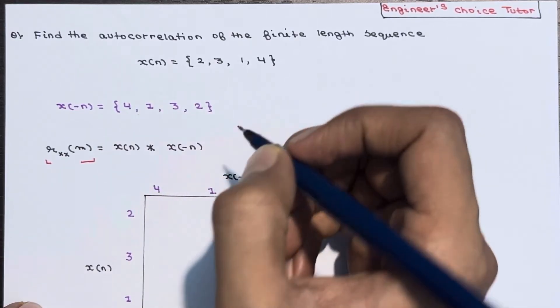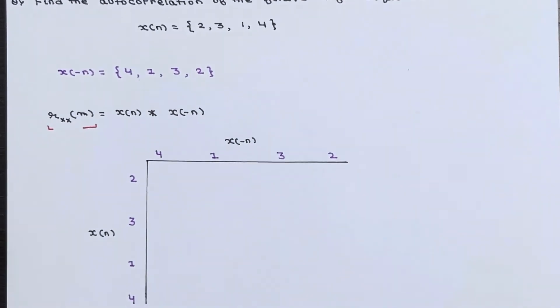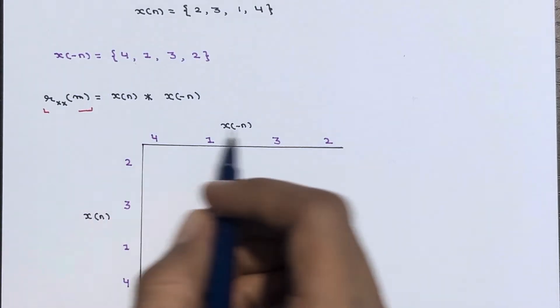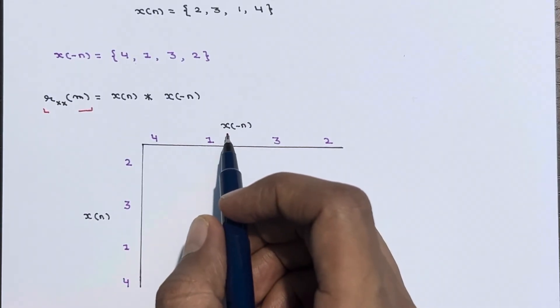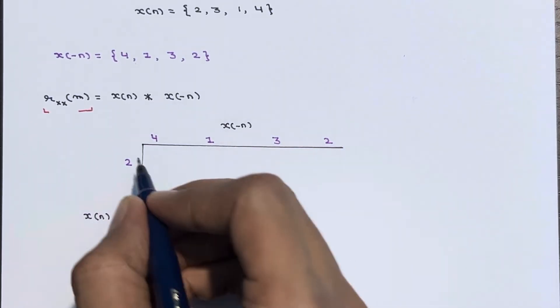So we have x(n) and we have x(-n). Now to get the autocorrelation, we have to perform the convolution of x(n) and x(-n). Let's perform the convolution using matrix method. In the matrix method, one of the sequences is represented as a row while the other sequence is represented as a column. This I am going to represent as x(-n) and the other one as x(n). The values: x(n) is 2, 3, 1, 4 and x(-n) is 4, 1, 3, 2.